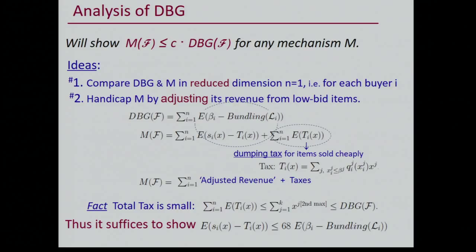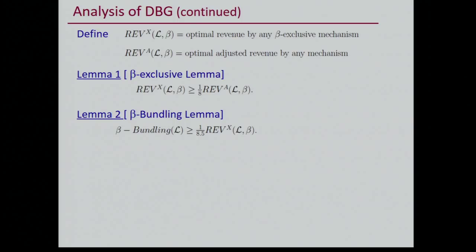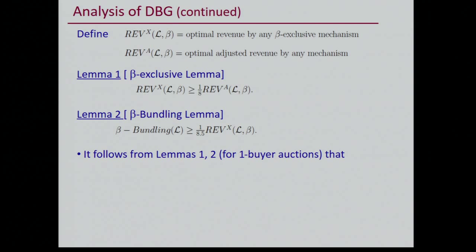Once we've taken care of the dumping tax, it remains to show that the adjusted revenue is bounded by a constant times the corresponding revenue from the beta-i bundling. In symbols: the revenue X is the optimal revenue by any beta-exclusive mechanism, and revenue A is the optimal adjusted revenue. We achieve the constant factor inequality via two lemmas: one comparing optimal adjusted revenue to the beta-exclusive optimal, and one showing beta bundling is a good beta-exclusive mechanism.